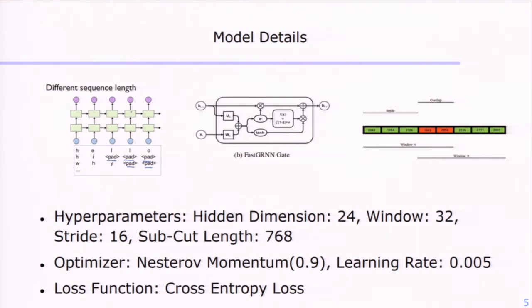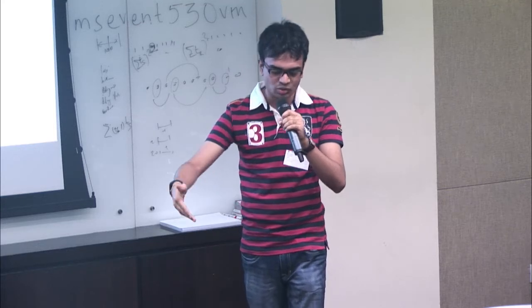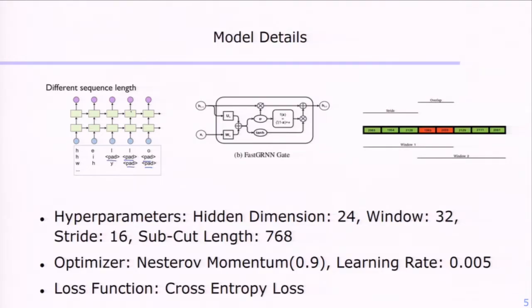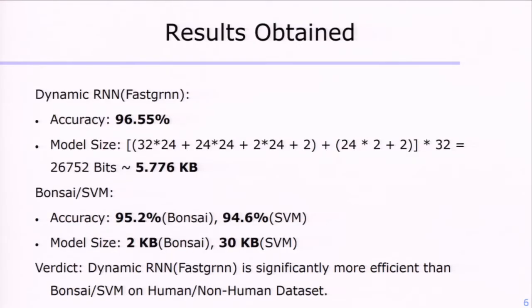We tried a second approach: a dynamic RNN, which had the flexibility that even if cuts were of varying length in the training dataset, it would unroll to the number of time steps of any specific cut. We took a sub-cut length from each cut, and if a cut did not have the length equal to the sub-cut length, we simply padded it. We then trained directly on the cuts and classified directly on the test cuts. This gave a pretty competitive accuracy of 96.5%, and we removed the restriction that test cuts had to be greater than 2.5 seconds — this works for all possible test cuts.